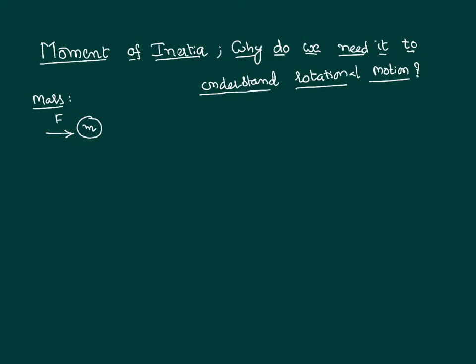If mass is less, it is easy to put the body in translatory motion. Similarly, when we want to rotate a body, we want to know whether it is easy or difficult to do so. To put a body in translatory motion we apply force; to put a body in rotatory motion we apply a physical quantity called torque, which is also called the turning effect. How difficult or easy it is to put a body in rotatory motion depends not only on the mass but on some other factors also.